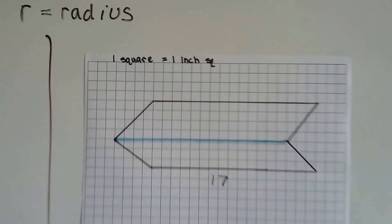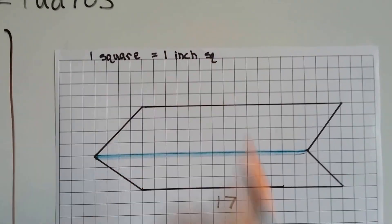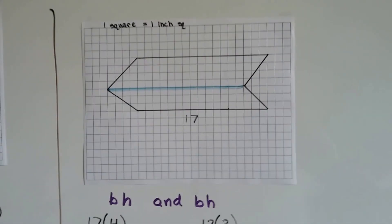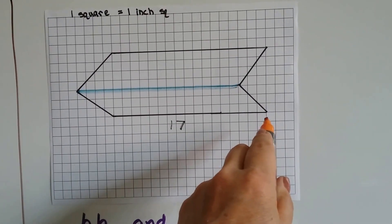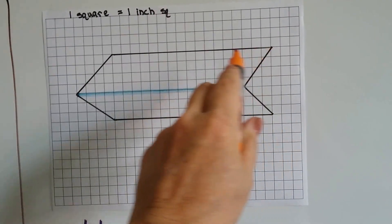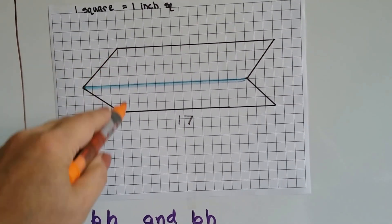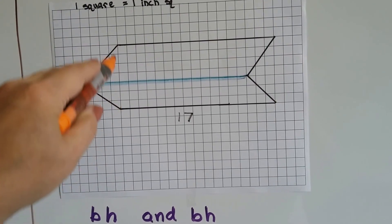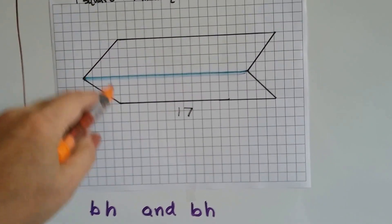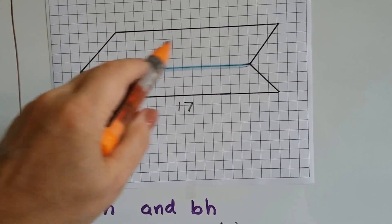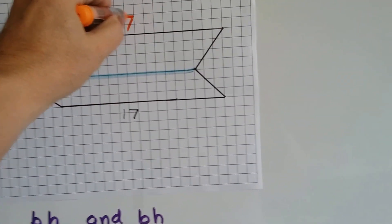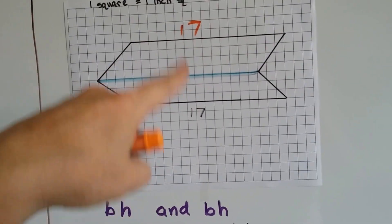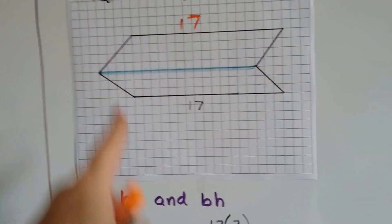Alright, this one says that one square is equal to one inch squared. And it says that this, right here, along here, is 17. Well, I can follow the line straight up and see that this one is curving down into this angle at the same spot as this one. So, the top one must also be 17. I can just tell by following the line.